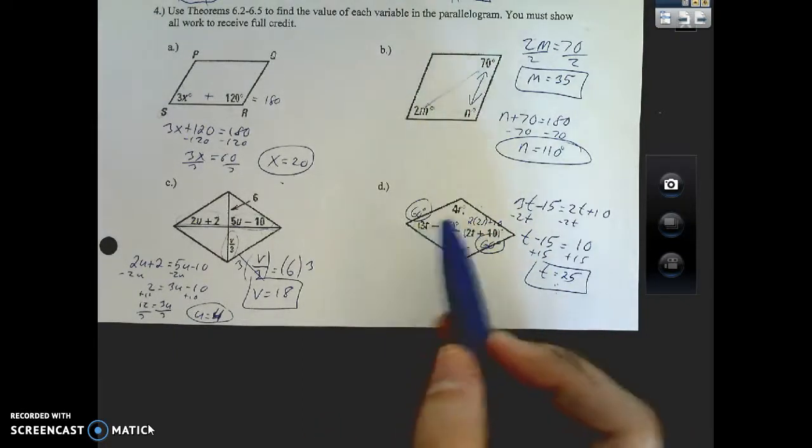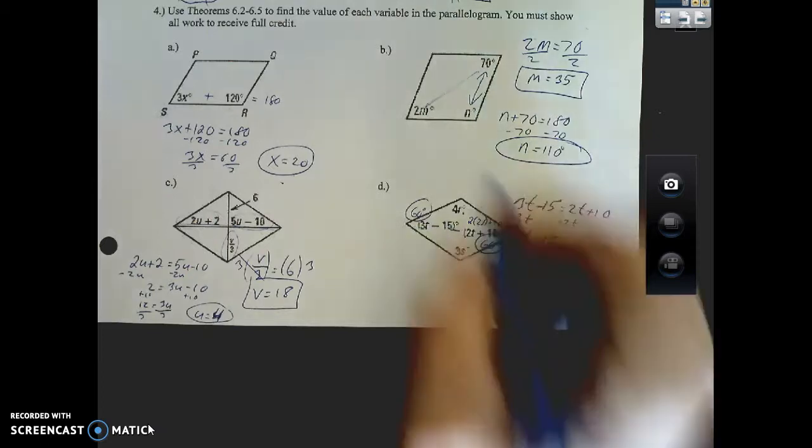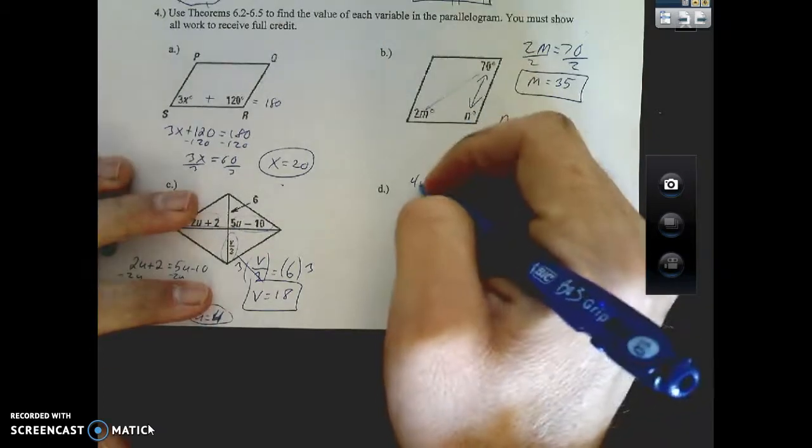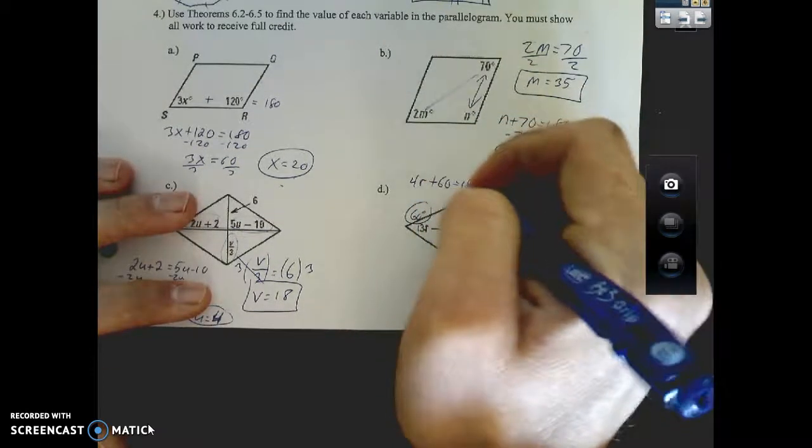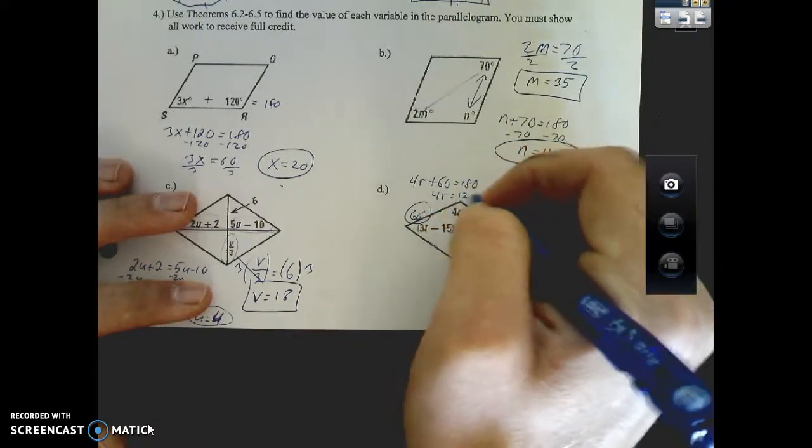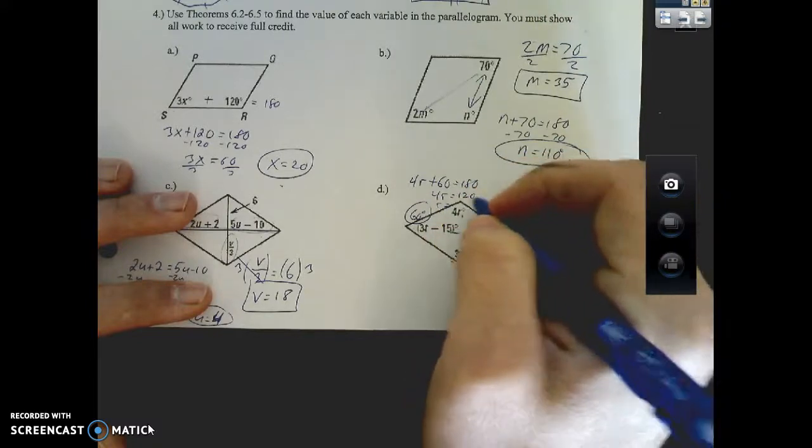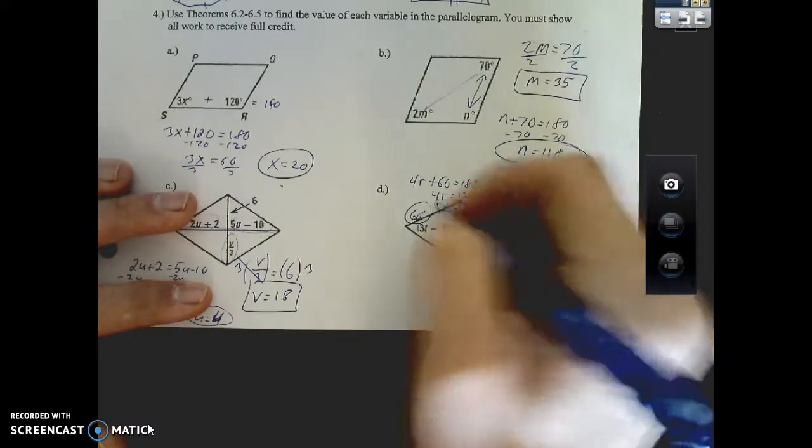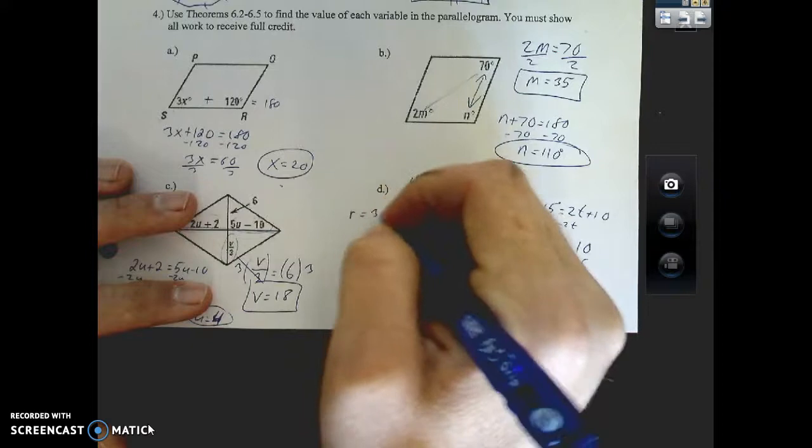Which means this has to be 60 degrees. 3 times 25 is 75 minus 15 gives you 60. What do things side by side add up to? 180. So 4r plus 60 equals 180, subtract 60, divide, r equals 30.